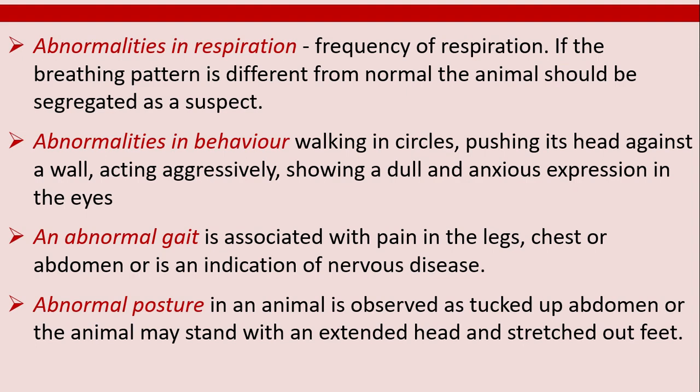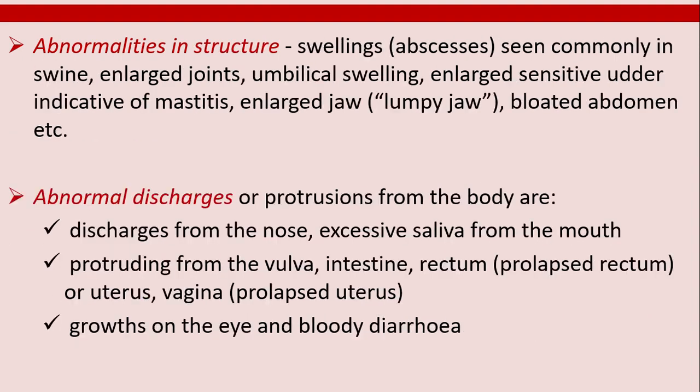Abnormal posture is observed in an animal as a tucked-up abdomen, or the animal may stand with an extended head and stretched-out feet. Abnormalities in structure include swellings seen commonly in swine: enlarged joints, umbilical swelling, enlarged sensitive udder indicative of mastitis, enlarged jaw known as lumpy jaw, and bloated abdomen.